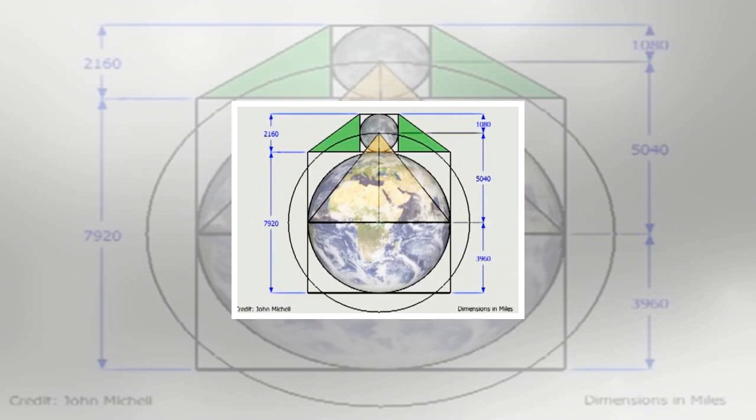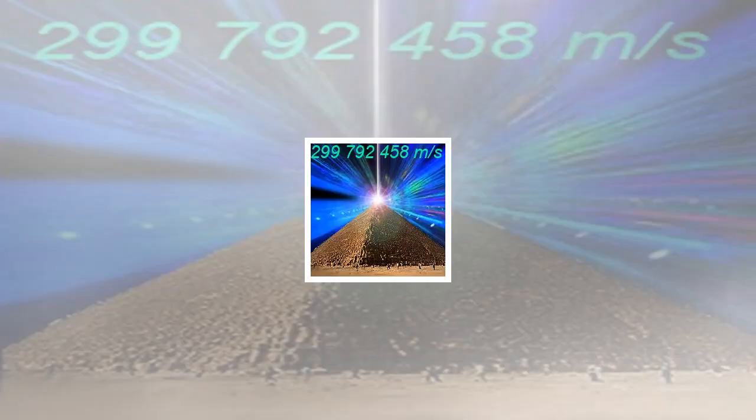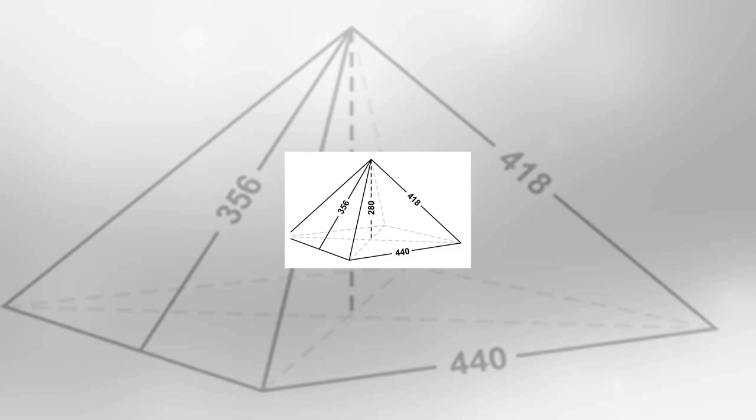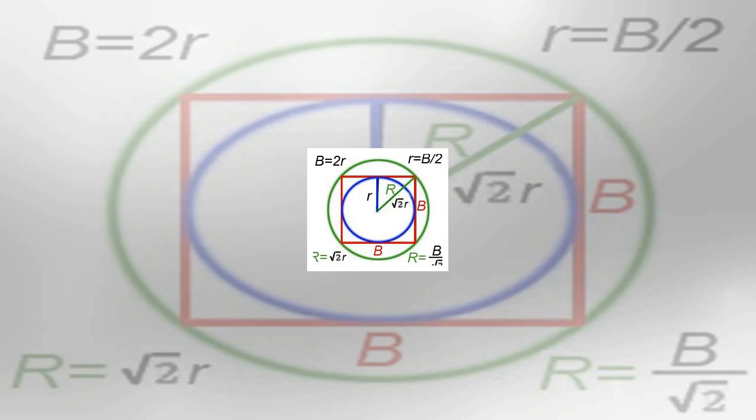Squaring the circle ratio 1.571: base÷height 442÷280 equals 1.571. Pi 3.14159: 2 × base÷height, 2 × 442÷280 equals 3.14286, which is very close approximation of pi 3.14159. The ratio of the perimeter to height of 1,760÷280 cubits equates to 2π, an accuracy better than 0.05%.